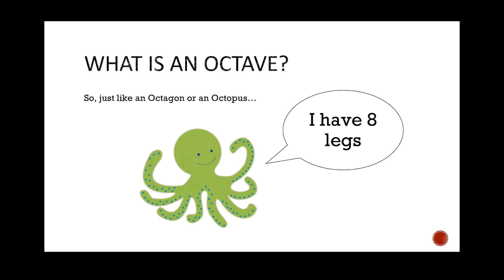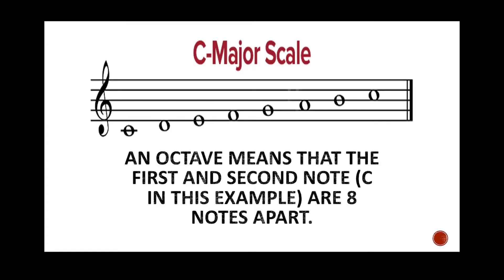Just like an octagon or an octopus — and our little octopus here is telling you that it has eight legs — an octave means that the first and second note that are the same, so C in this example, are eight notes apart. You can pause the video here and count the notes, and if you want, you can even have a go at writing the correct note name underneath each note. When you're ready to move on, press play.